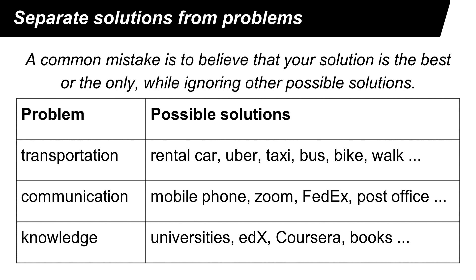Let's consider a few examples. People need transportation — they need to go from one place to another, maybe to meet friends, family, or business partners. Transportation can be accomplished by many ways such as a rental car, Uber or Lyft, taxi, bus, bicycle, or even walking. You have to understand that people's need is transportation. In many cases, people don't really care about the method — they do not necessarily care about a rental car or taxi, as long as they can get to their destination easily and safely.